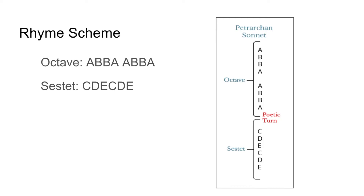So this is the rhyme scheme of a Petrarchan sonnet. The octave is A-B-B-A, A-B-B-A, and the sestet is C-D-E-C-D-E. Now if you're not familiar with rhyme schemes, I'll make it clear in a second with an example. But basically, the last word in each line gets a letter, and all the other last words in the following lines that rhyme get the same letter.